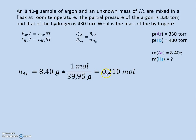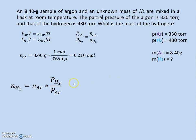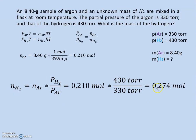argon has an amount of 0.21 mole in our flask. Now if we solve the previous equation for the amount of hydrogen, we can calculate it, which is the amount of argon multiplied with the pressure of hydrogen divided by the pressure of argon, and we'll see that our hydrogen has an amount of 0.274 mole.